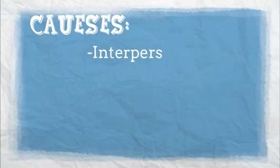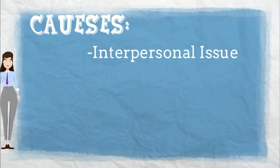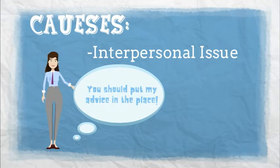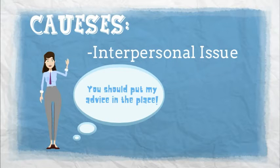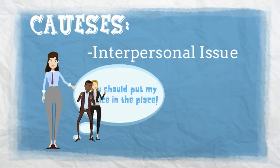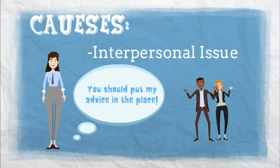Second, the interpersonal issue also plays an important role. Ms. Dyer has an antagonistic personality. She thought the management team should put her idea in place without thinking about the uncertainties of using the new system. Her personality and emotions led to conflict with the management team.